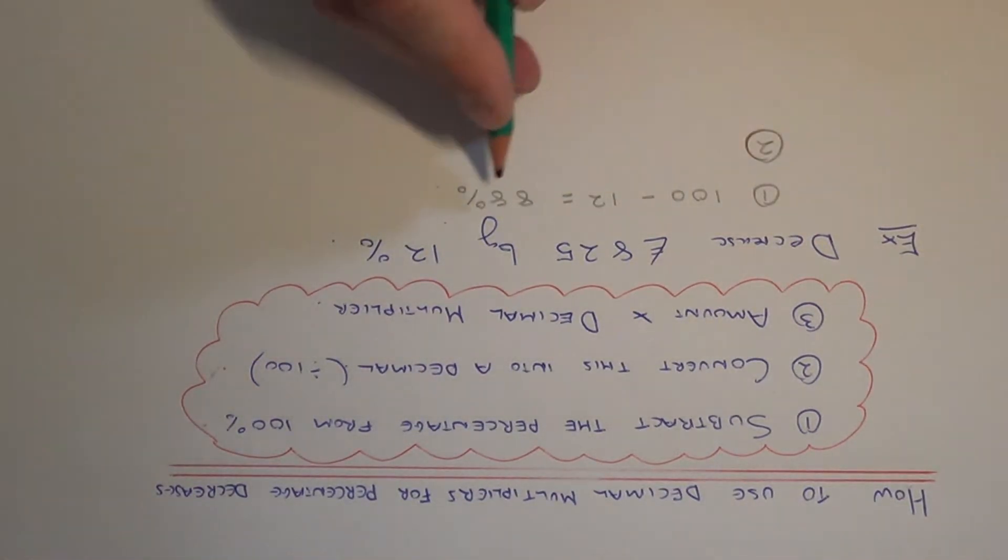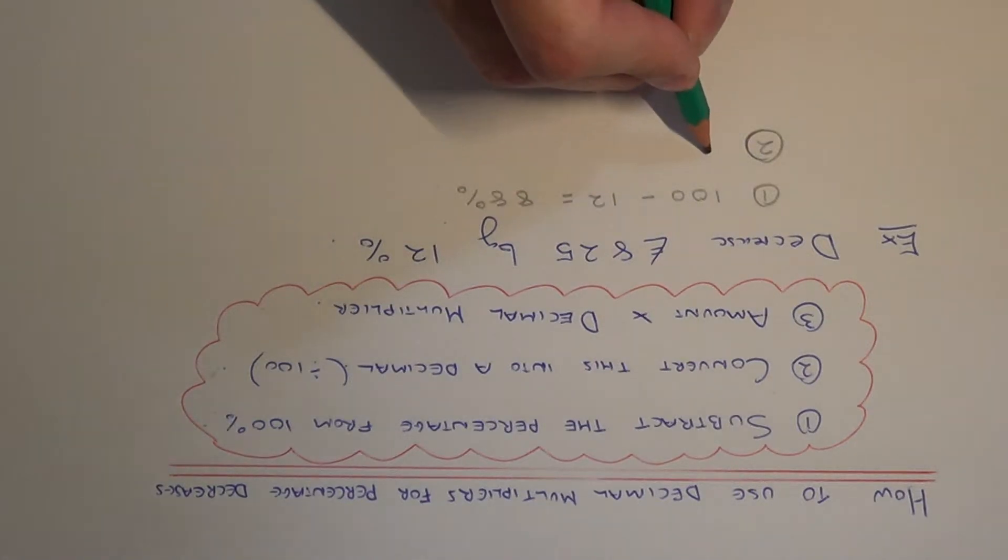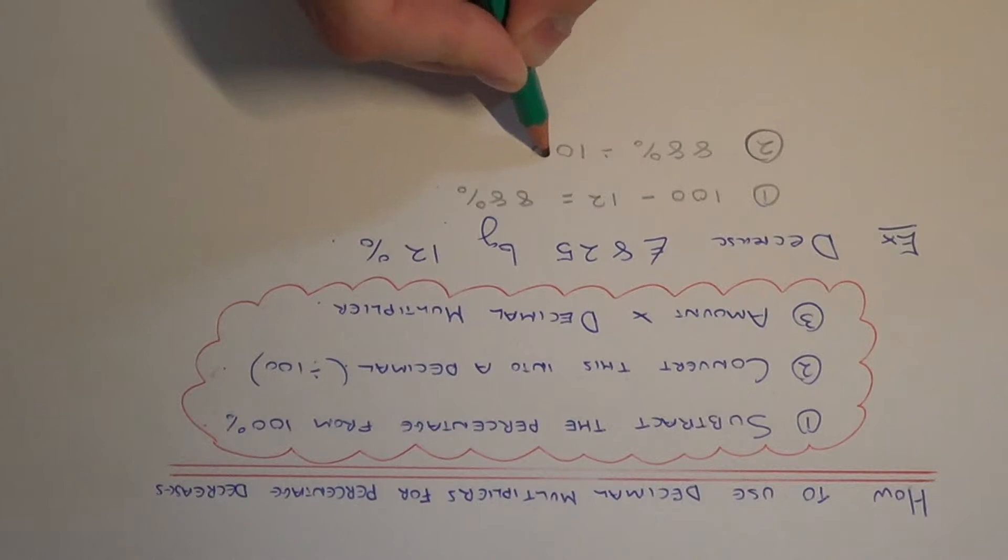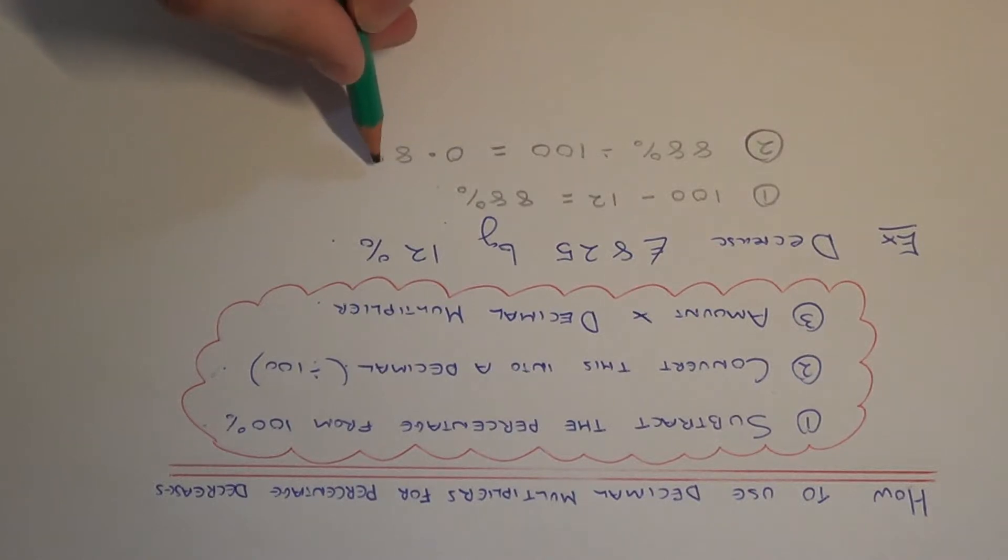Step two, you then convert the percentage into a decimal and you do that by dividing by 100. And that will give you 0.88. So this is your decimal multiplier.